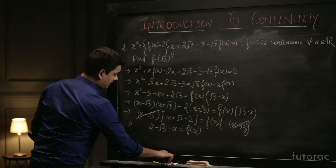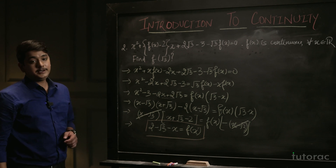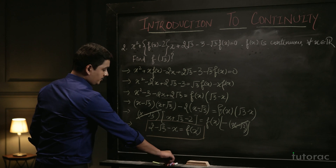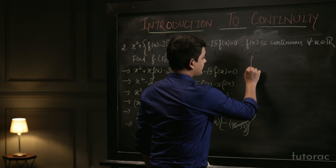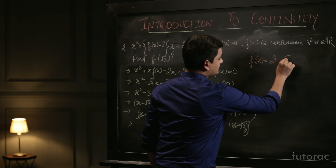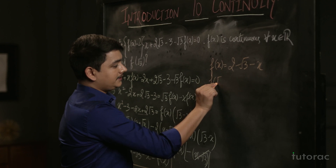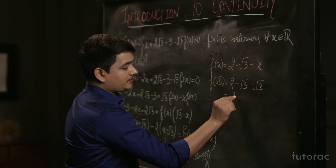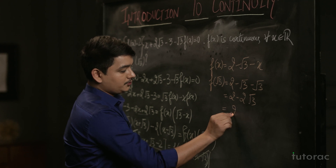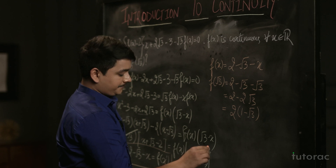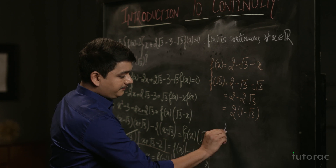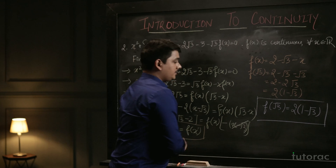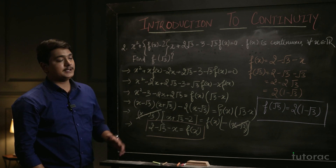We have found f(x) = 2 − √3 − x. Substituting x = √3 to find f(√3): f(√3) = 2 − √3 − √3 = 2 − 2√3 = 2(1 − √3). So the value of f(√3) = 2(1 − √3). This is how we deal with continuous functions.